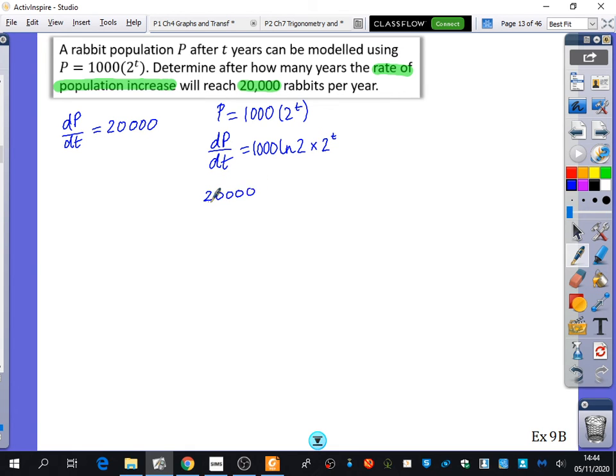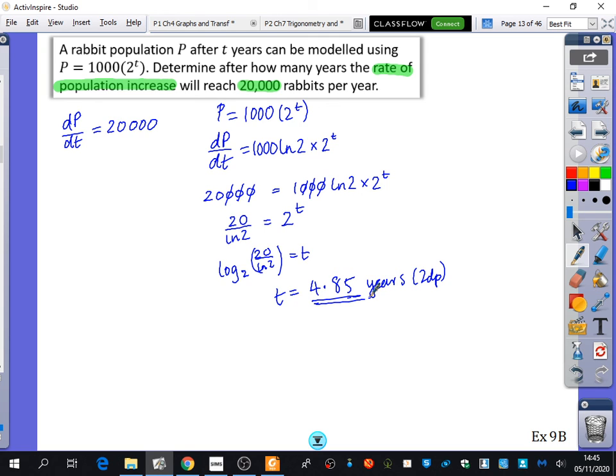We're now going to try and make that equal 20,000. So, 20,000, that's the rate of change. In fact, it's the rate of increase. If it was said a population decrease, I would have wanted to put a negative in front of it. So, 20,000 equals 1,000 ln2 times 2 to the power of T. So, I'm going to divide by 1,000. So, I've got 20, and I'll divide by ln2. So, that's 20 over ln2 equals 2 to the power of T. And does anyone think that you could change that to a logarithm statement for me? Log base 2, 20 over ln2 is equal to T. So, I'm just going to type that in my calculator, and then we're done. Log of base 2, 20 over ln2, and we get 4.85 years to two decimal places.